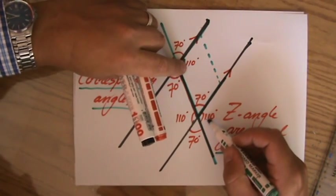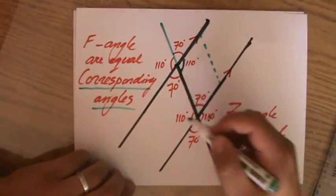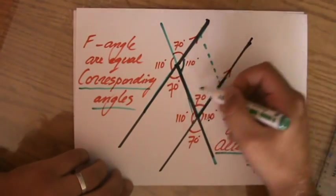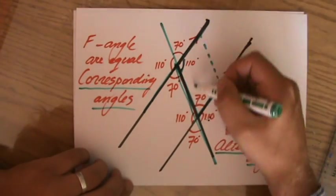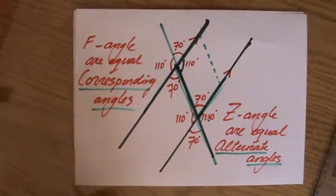But you actually already saw that because of the properties of vertically opposite angles. So alternate angles, Z angles, and F angles, which we call corresponding angles.